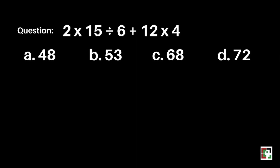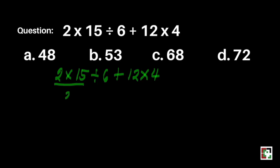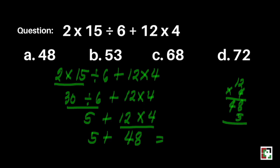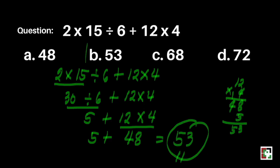Next question: 2 times 15 divided by 6 plus 12 times 4. Is it A) 48, B) 53, C) 68, or D) 72? Since we don't have any groupings or exponents, we proceed right away to multiplication, as it is the first operation from left to right. 2 times 15 is 30. Next, 30 divided by 6 is 5. Then we multiply: 12 times 4 is 48. So 5 plus 48 is equal to 53. Our final answer is letter B.